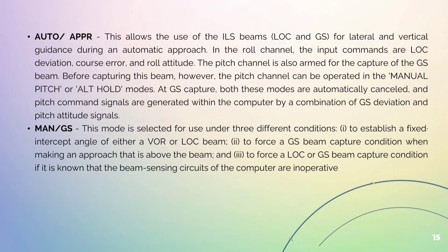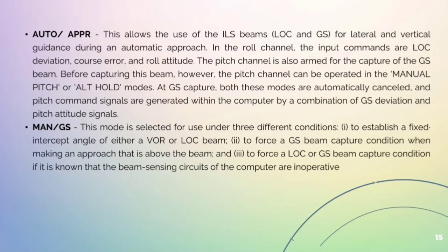The pitch channel of the computer can be operated in either the manual pitch mode or the ALT mode. AUTO APPR: This allows the use of the ILS beam LOC and GS for lateral and vertical guidance during an automatic approach. In the roll channel, the input commands are LOC deviation, course error, and roll attitude. The pitch channel is also armed for the capture of the GS beam. Before capturing this beam, the pitch channel can be operated in manual pitch or ALT mode. At GS capture, both these modes are automatically cancelled and pitch command signals are generated within the computer by a combination of GS deviation and pitch attitude signals.